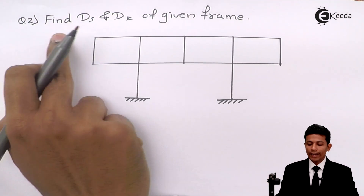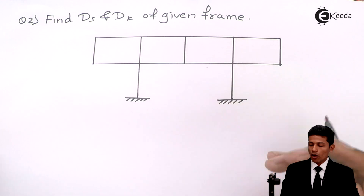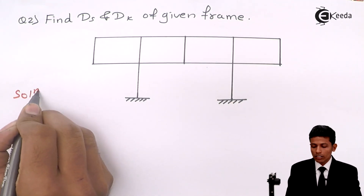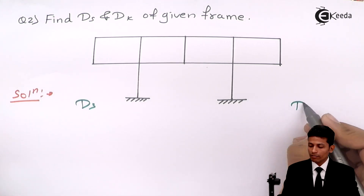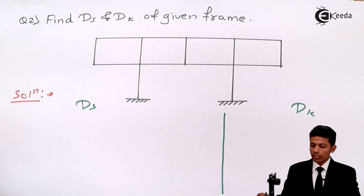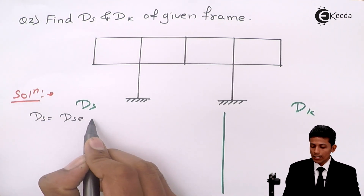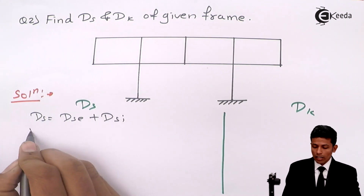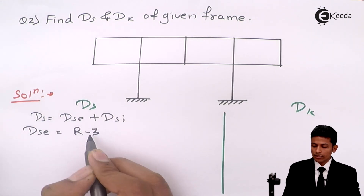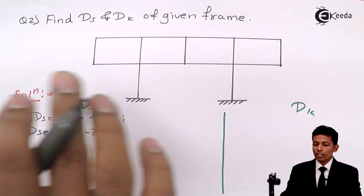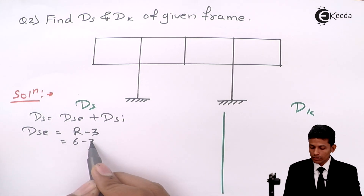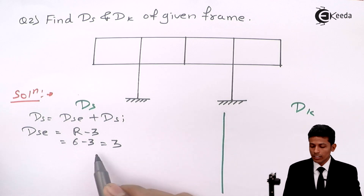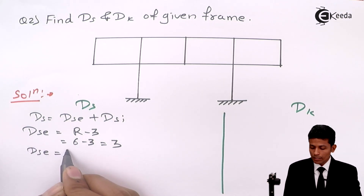Now starting problem number two: find DS and DK of the given frame. Let's start with the solution. DS = DSe + DSi. For DSe = r − 3; there is no internal hinge so no (m' − 1) term. The supports give r = 3 + 3 = 6, so DSe = 6 − 3 = 3.